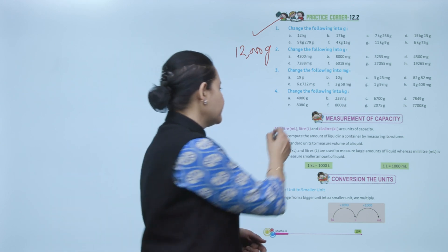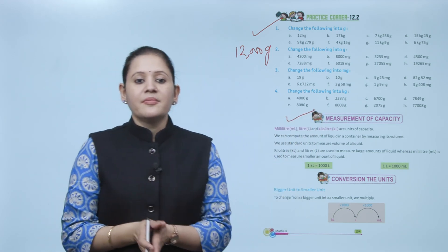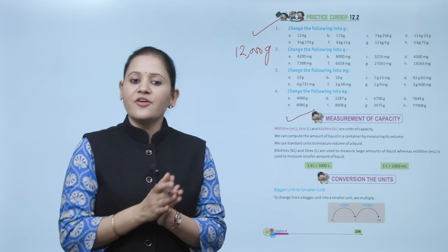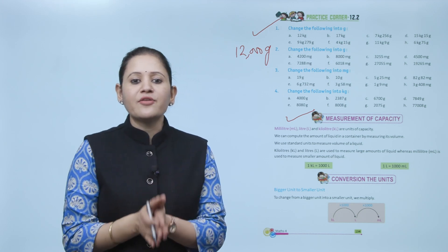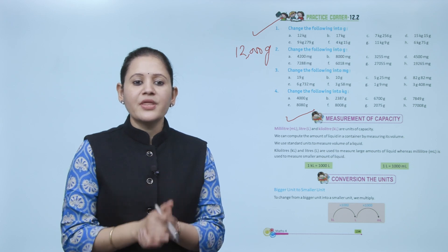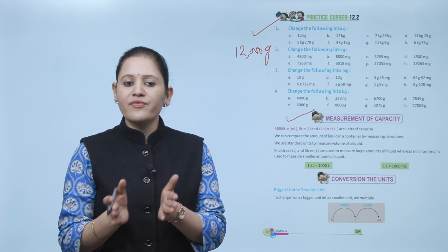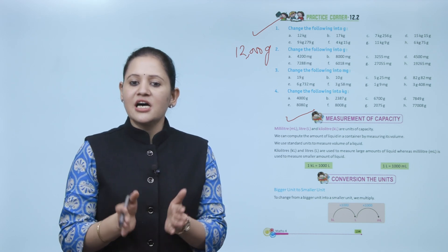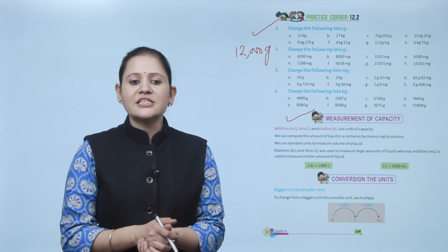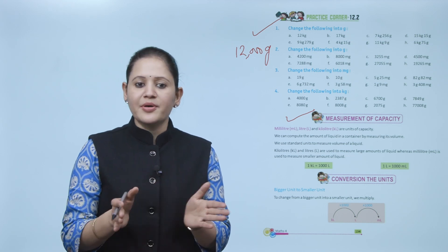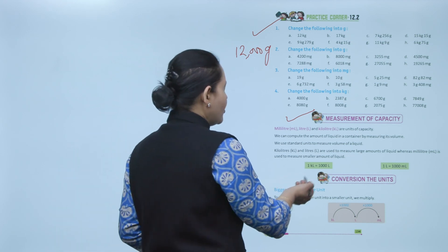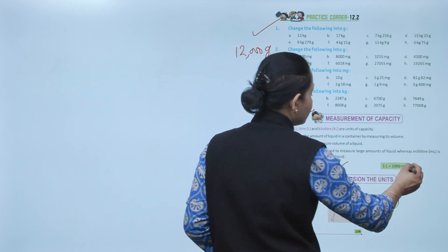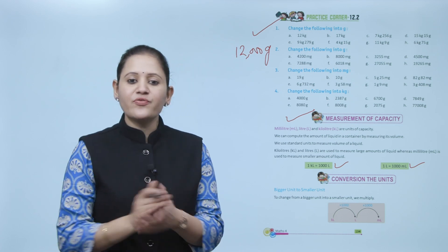Milliliter, liter, and kiloliter are the units of capacity. We measure the amount of liquid in a container by measuring its volume. Kiloliter and liter are used to measure large amounts of liquid, whereas milliliter is used to measure smaller amounts. One kiloliter equals 1000 liters, and 1 liter equals 1000 milliliters. Next is conversion of units.